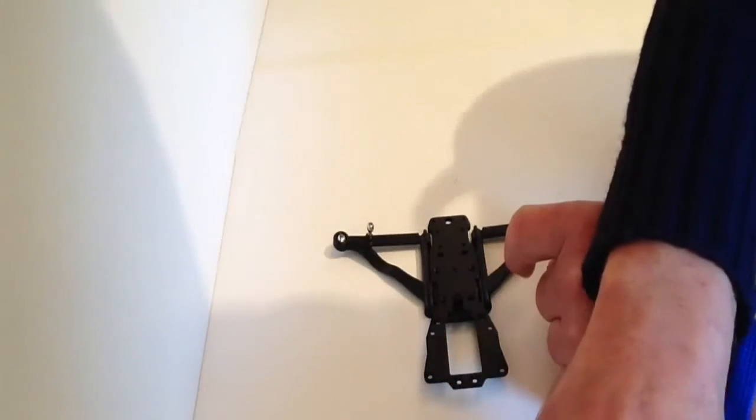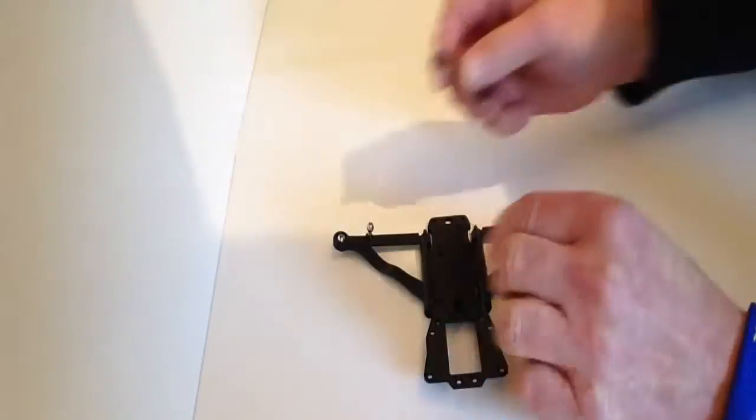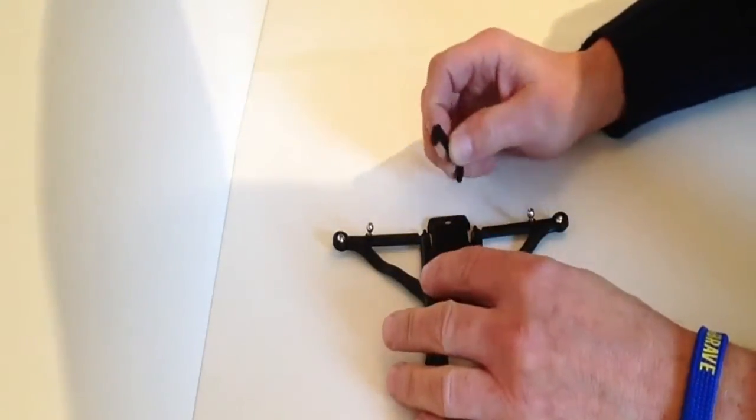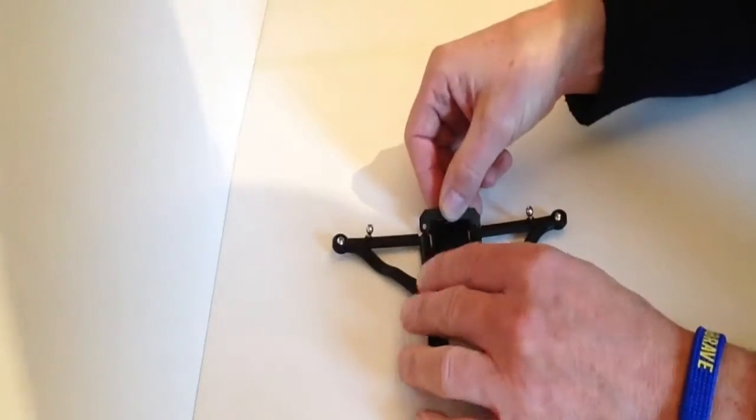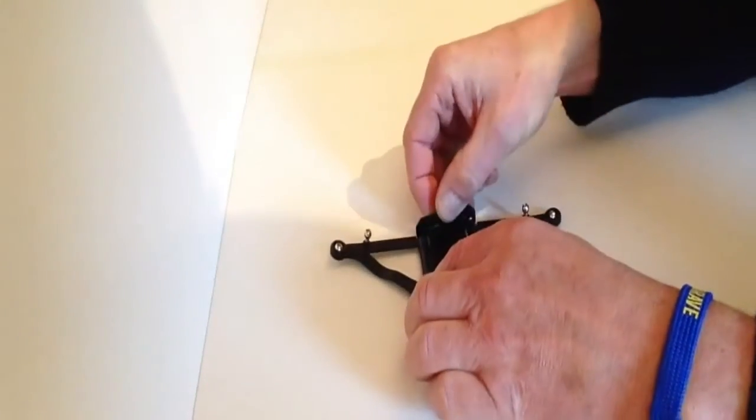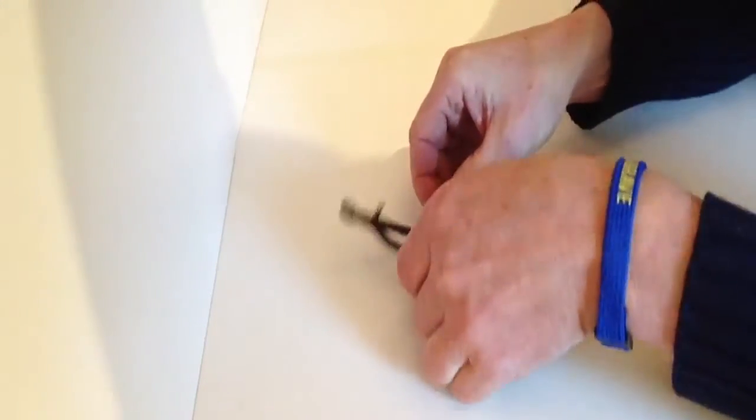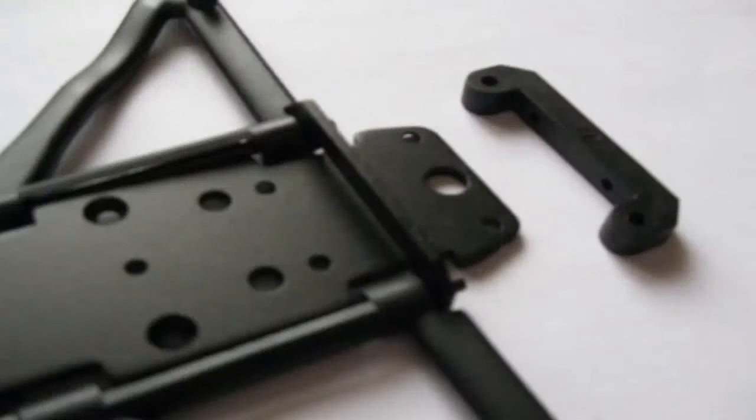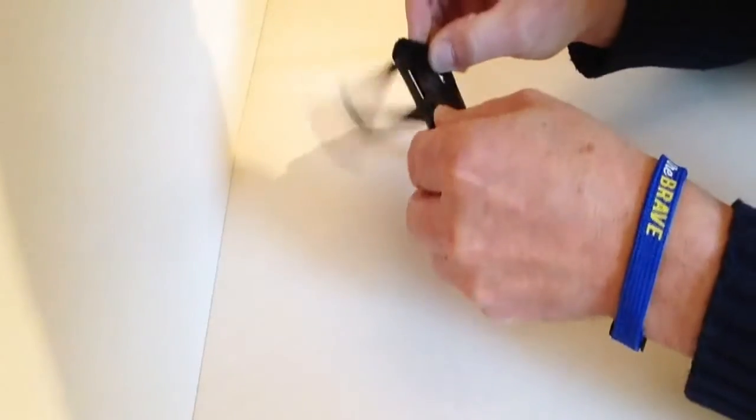Now place the front lower wishbone plate, also from issue 5, on the three ends of the mounting struts. We're going to place that over the rods like so.